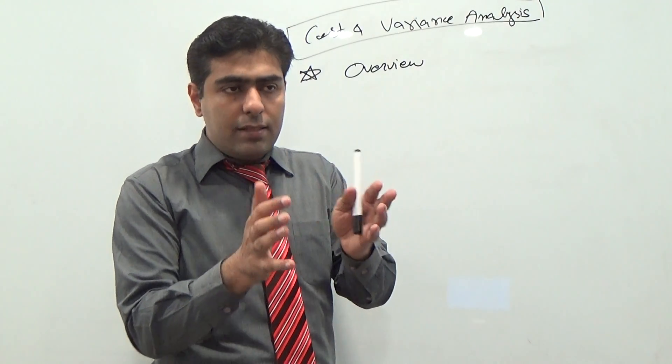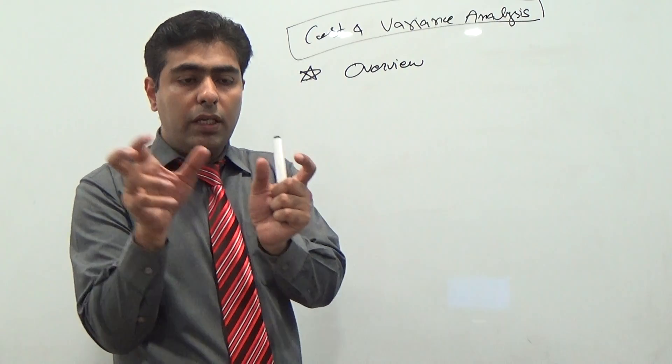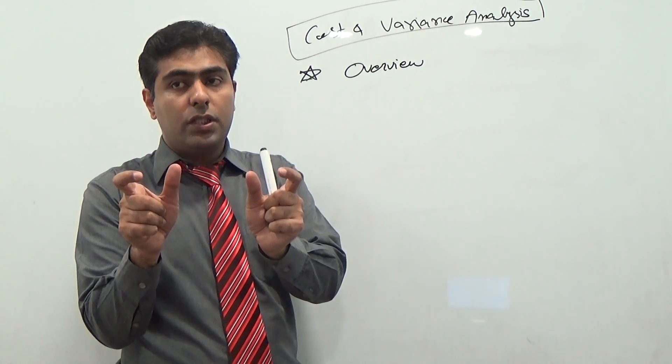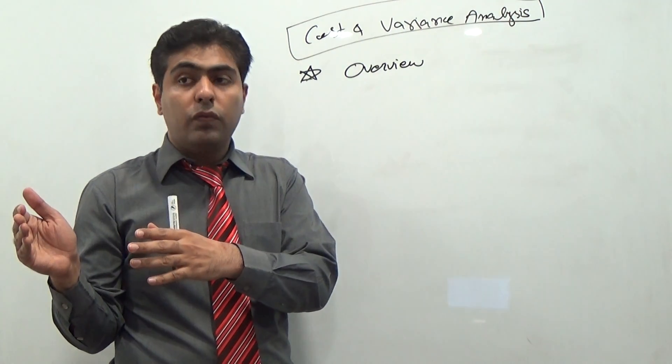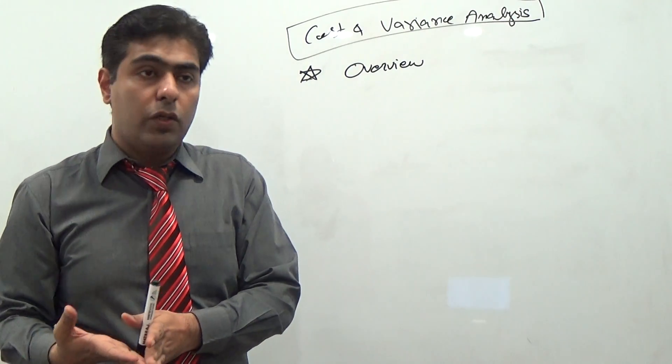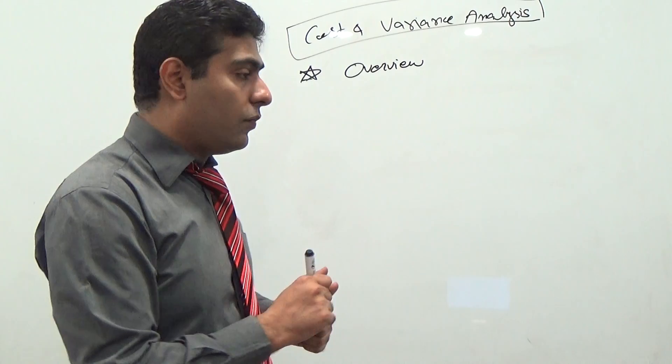The variance means that there will be budgeted quantity and after that there will be actual quantity. So actual minus budgeted equals variance. There can be two types of variance: either favorable or unfavorable as well. I will discuss this in detail in front of you.